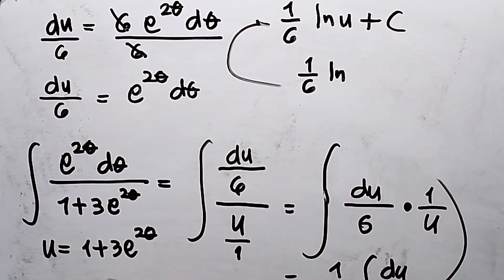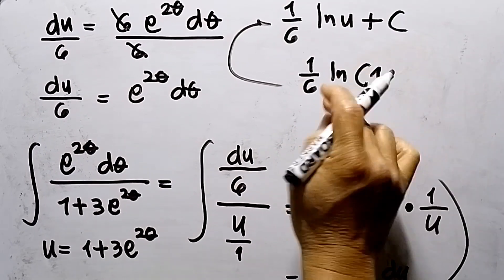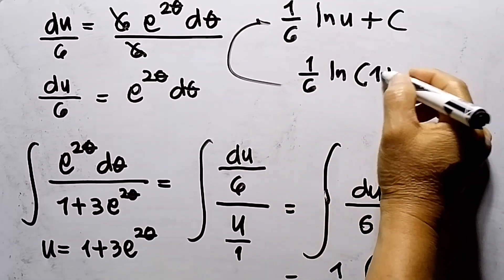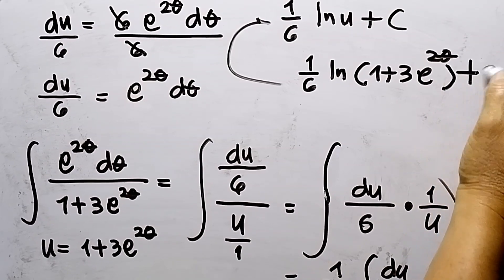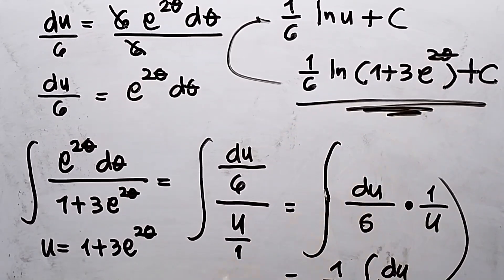So what is our u assumption is this one. So this will be 1 over 6 ln, substitute the value of u, 1 plus 3e to 2θ, then this will be plus c. So this is the answer and that's all.